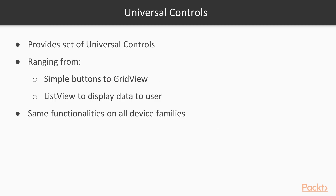After that, universal controls. The platform provides you with a set of universal controls which you can use in all Windows devices that target UWP. This set of controls includes everything, ranging from simple buttons to the powerful grid view and list view to display data to the user. When you use these controls, you will get the same functionalities on all device families.